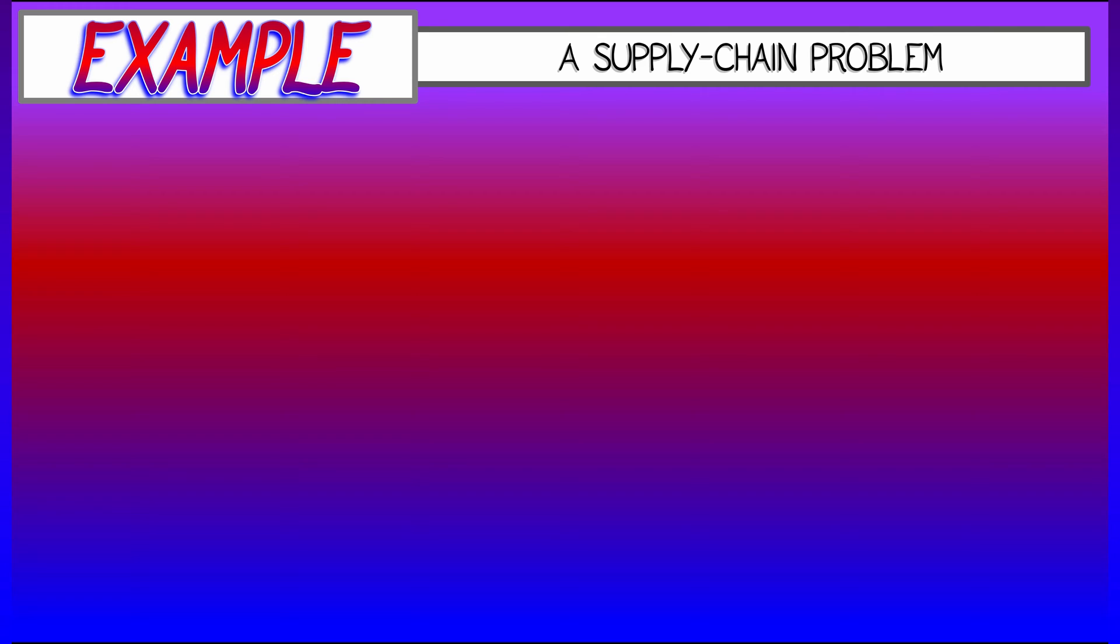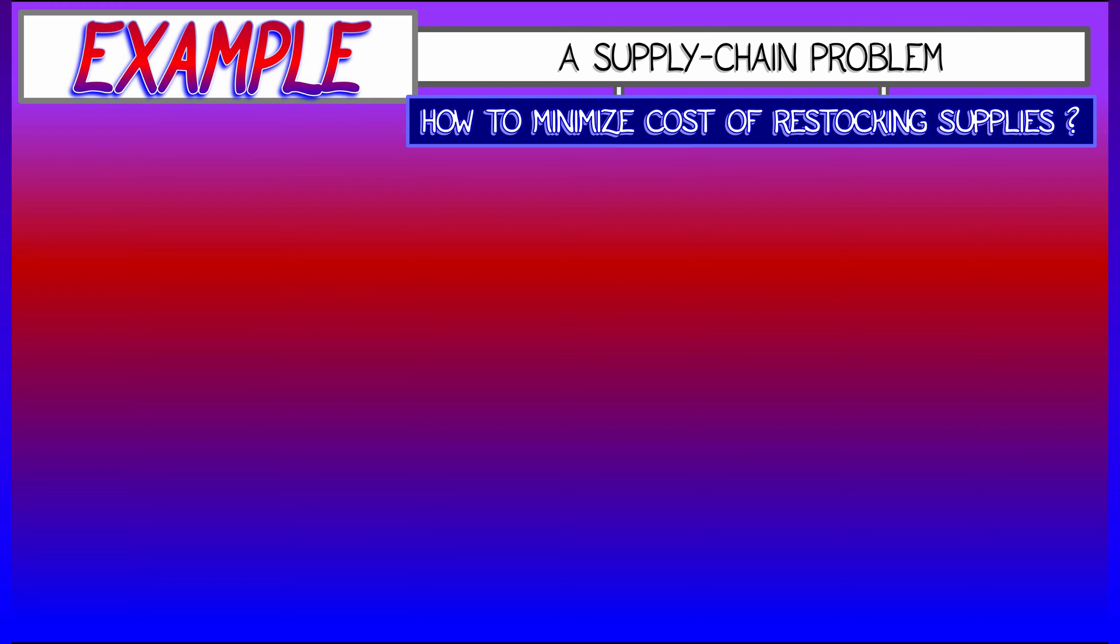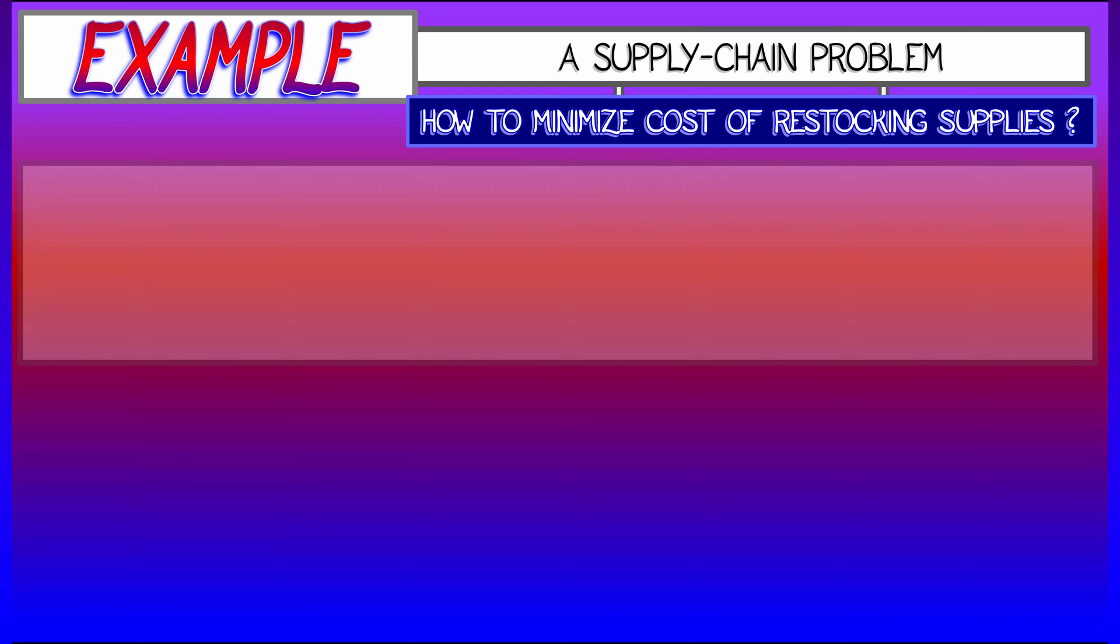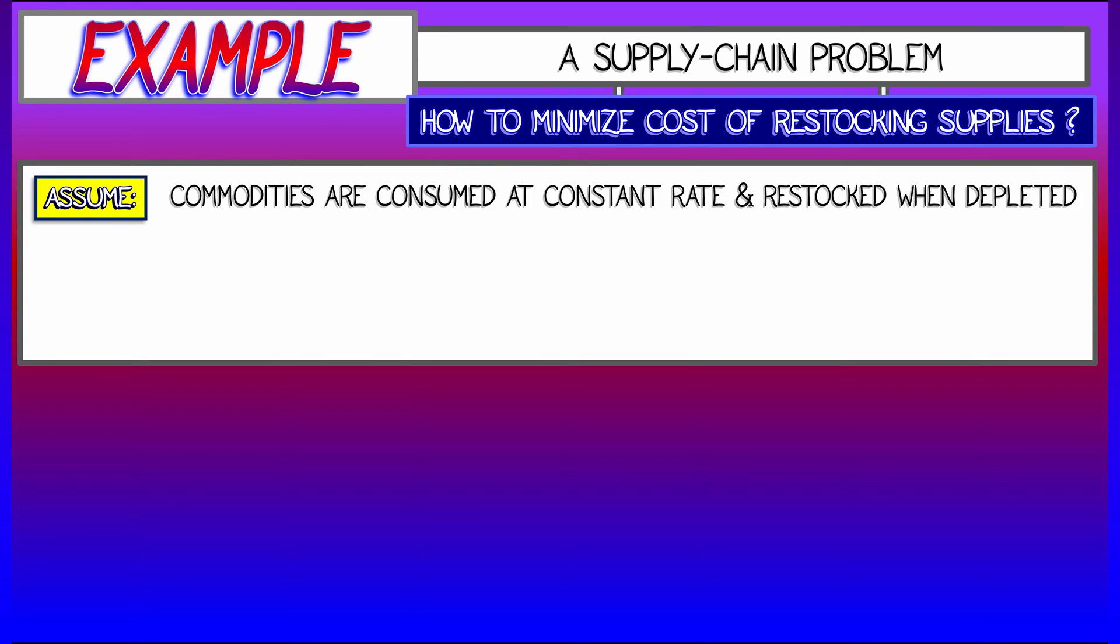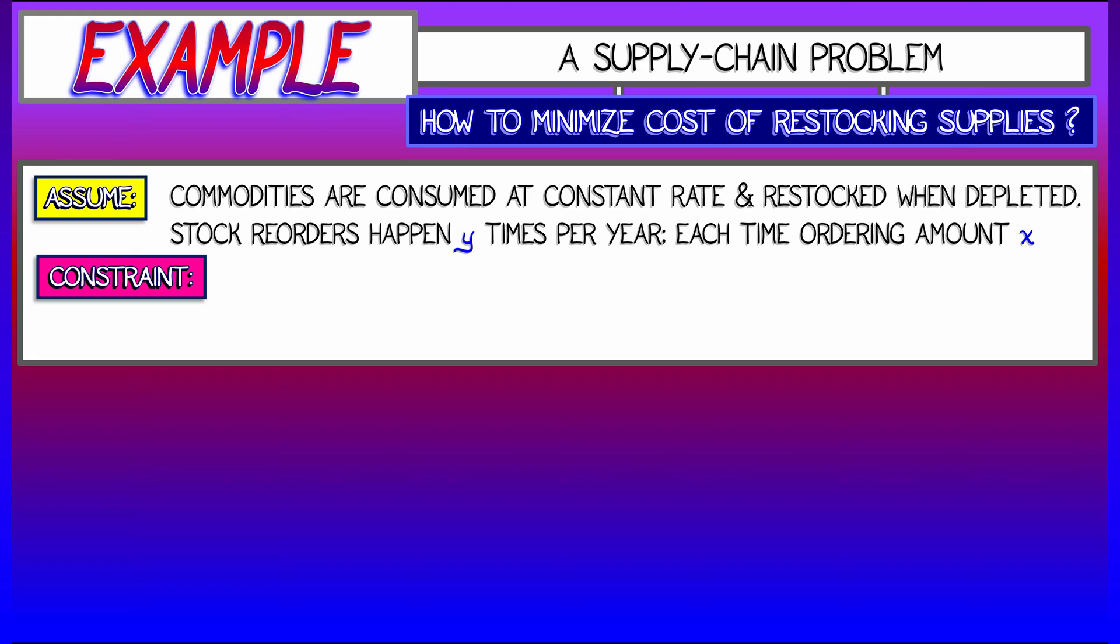This is a supply chain problem about minimizing cost associated to restocking supplies. Let's say you run a business and your business consumes a certain commodity at a constant rate. And whenever you run out, you reorder, you restock. How many times does that happen? Let's say that happens y times per year. And every time you reorder supplies, you order an amount x. Now, the constraint is you need a total amount of supplies to run your business per year. Let's say that annual amount is s.